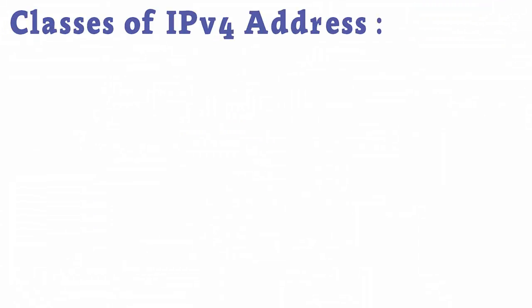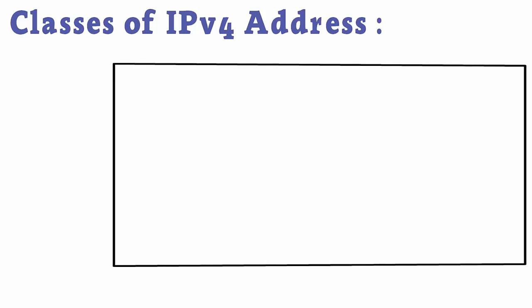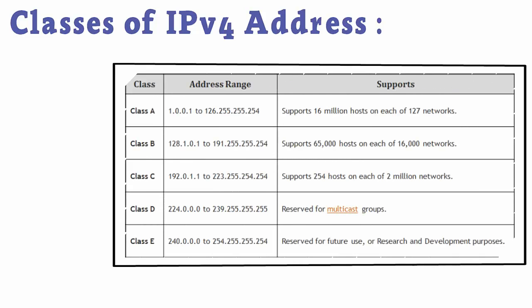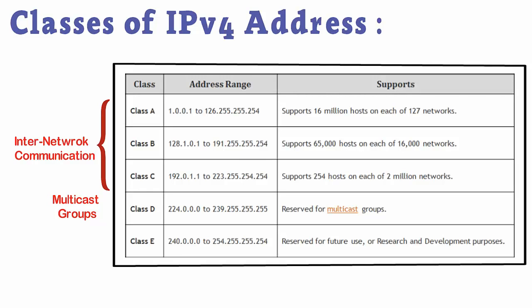Classes of IPv4 Address: This picture shows the classes and their range of IP addresses. The first three classes — Class A, B, and C — include IP addresses which are used for inter-network communication. Class D is reserved for multicast groups. The fifth class, Class E, is reserved for future experimental purposes.